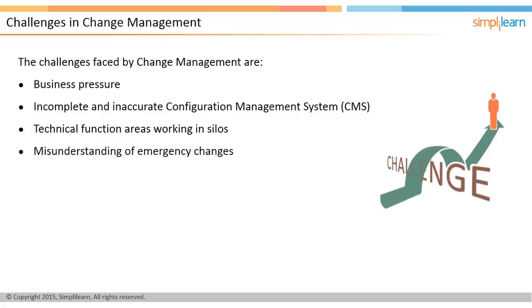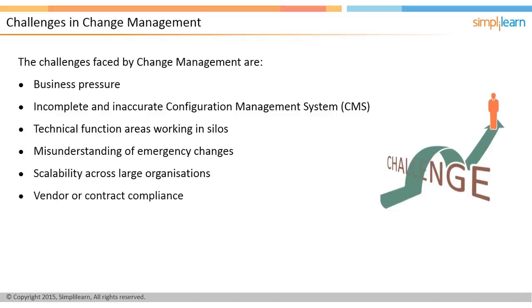Additional challenges include misunderstanding of emergency changes — sometimes the technical team may confuse the urgency of implementing a change with emergency changes. Scalability in a large organization is a challenge, as some CIs may not be deployable in the existing infrastructure. Finally, vendor or contract compliance can be a challenge when vendors have their own change management system and may resist adopting the business organization's process.